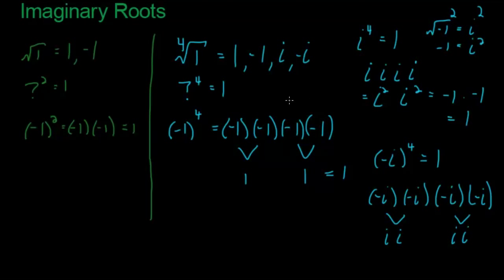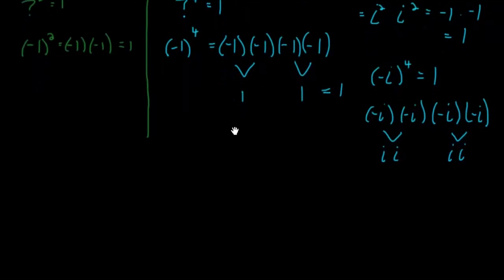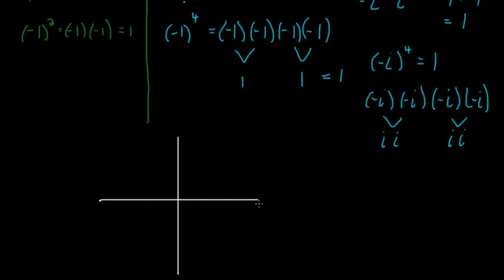The square root of one has two solutions, and the fourth root of one has four solutions. Now I'm going to do something clever — I'm going to plot these on a Cartesian plane, which is just an XY plane. I'll put the real numbers on the x-axis — one and negative one — and the imaginary numbers on the y-axis — i and negative i.